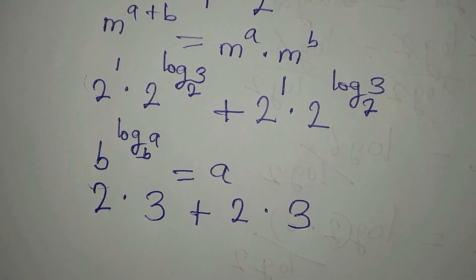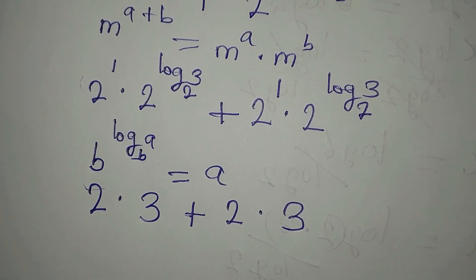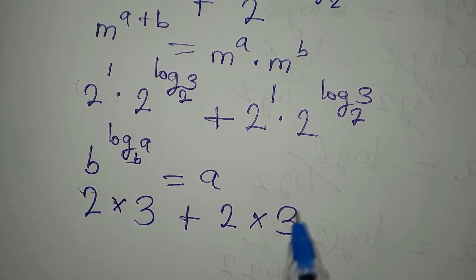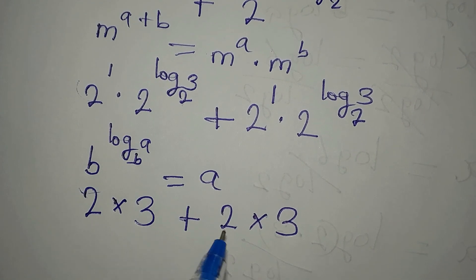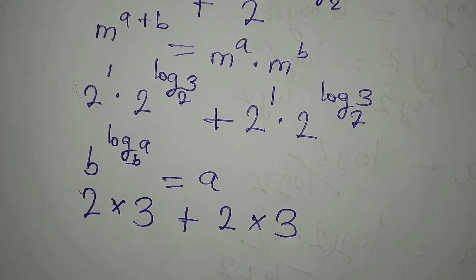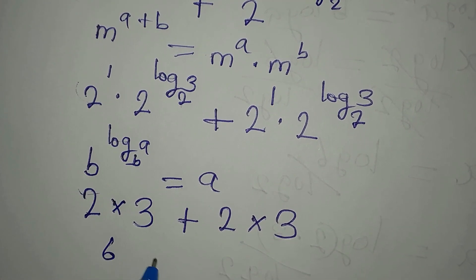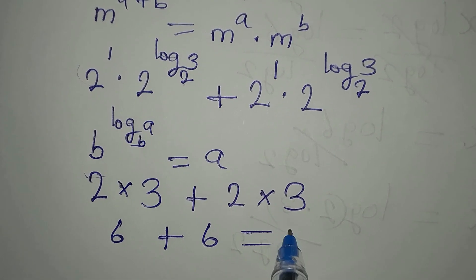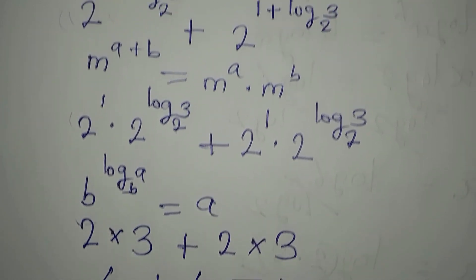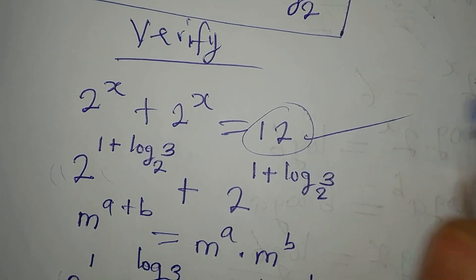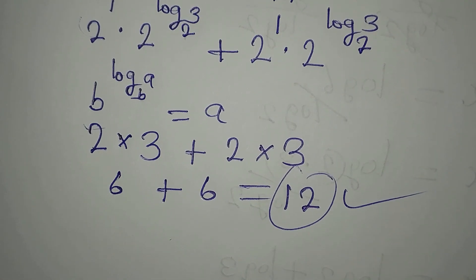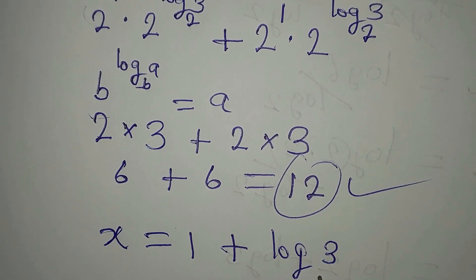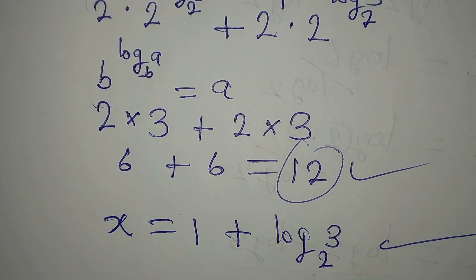Applying the correct order of operations — multiplication before addition — 2 times 3 gives 6, and the other 2 times 3 gives 6 as well. Then 6 plus 6 equals 12, which is the same 12 we had on the right-hand side of the equation. This confirms that x equals 1 plus log 3 to base 2 satisfies the equation. Thank you.